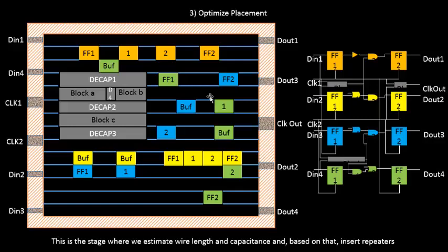For the path from DIN4 to DOUT4, along the path you will see a lot of buffers placed. The signal from DIN4 enters a buffer and then enters flip-flop 1, so significant signal conditioning is done. From flip-flop 1 to gate 1, there is no buffer because the estimated wire length is small. From gate 1 to gate 2, the distance is large, so a buffer is placed. From gate 2 to flip-flop 2 and from flip-flop 2 to DOUT4, the estimated wire length is small, so no buffers are needed.